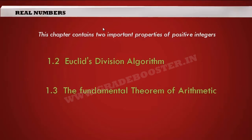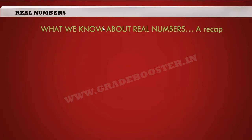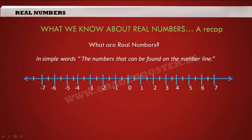What are real numbers? In simple words, the numbers that can be found on a number line are called real numbers. Here we have a number line. The point called the origin is represented by zero. To the right of zero you find all the positive numbers — 1, 2, 3, 4 — and to the left of zero you find all the negative numbers.